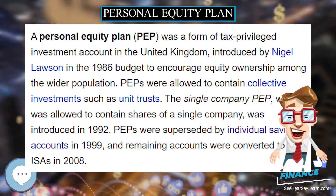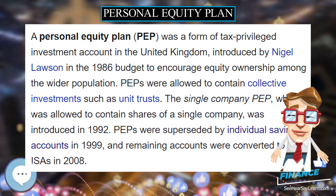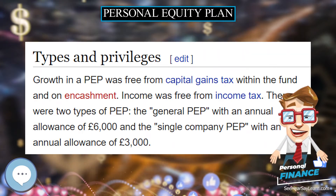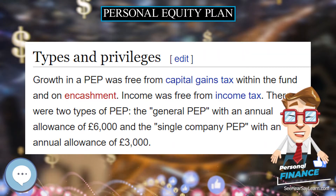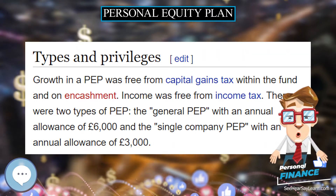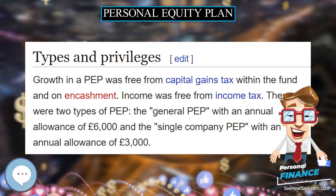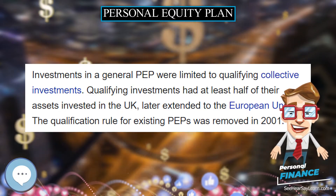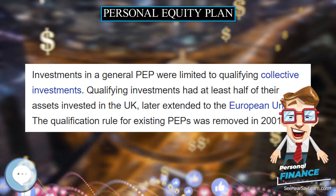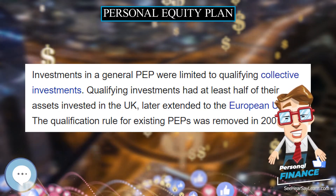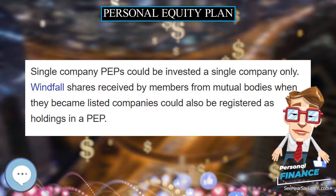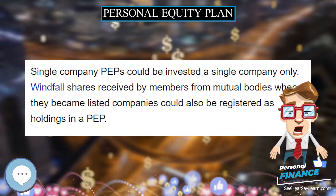A Personal Equity Plan, or PEP, was a form of tax-privileged investment account in the United Kingdom, introduced by Nigel Lawson in the 1986 budget to encourage equity ownership among the wider population.